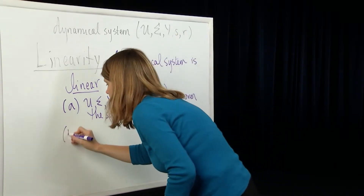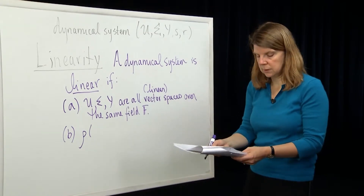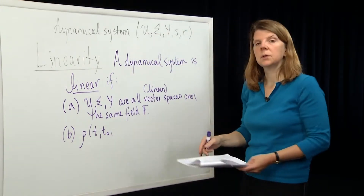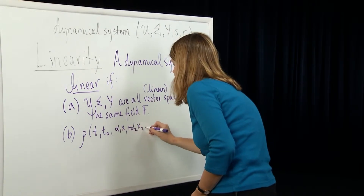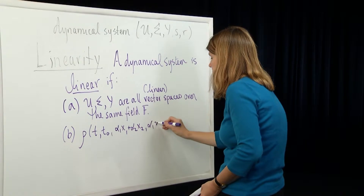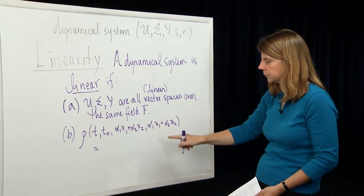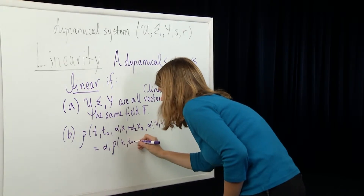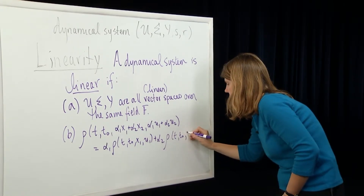The second condition is the main linearity condition: the response function has to be linear in two of its arguments, in the state and the input. We write that as rho at current time t, given we started at time t0, with an initial state which is a linear combination alpha1*x1 + alpha2*x2, and an input which is the same linear combination alpha1*u1 + alpha2*u2. If the system is linear, this must equal alpha1*rho(t, t0, x1, u1) + alpha2*rho(t, t0, x2, u2).